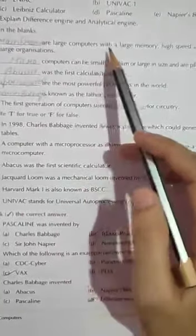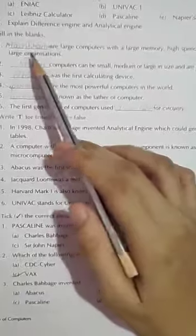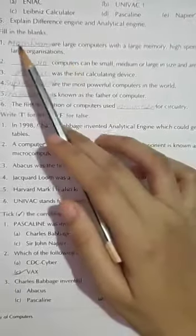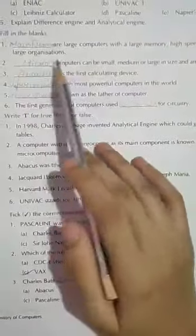Dash are large computers with a large memory, high speed and are used in large organizations. Mainframes are large computers with a large memory, high speed and are used in large organizations.